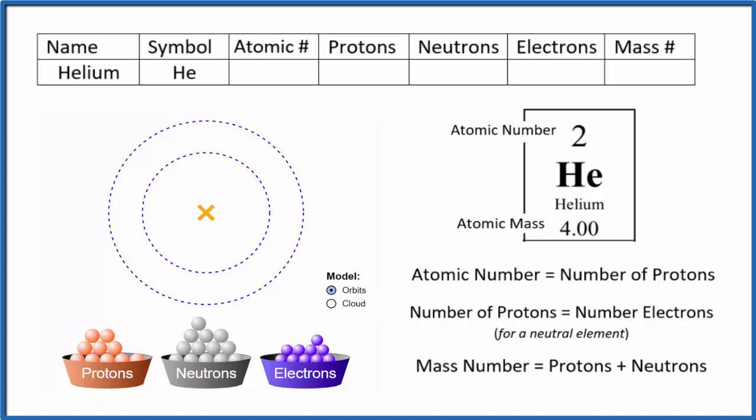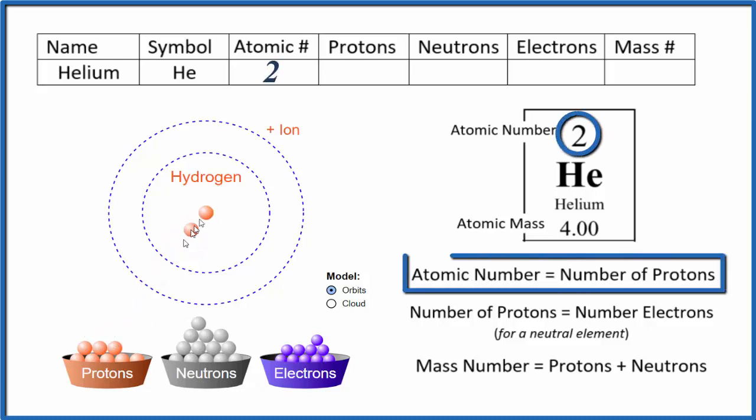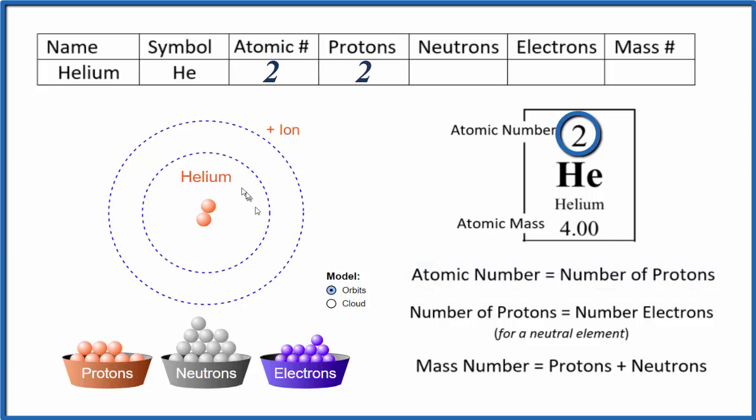Let's take a look at the app. We have protons for helium. On the periodic table, the atomic number for helium is 2. That means we have 2 protons, so we can write atomic number 2 and number of protons 2.